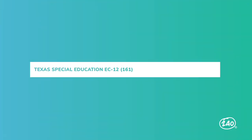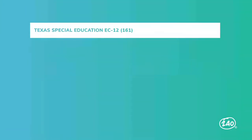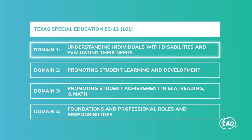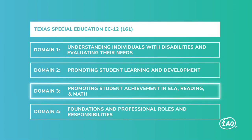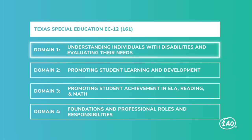The Texas 161 exam is broken into four domains: understanding individuals with disabilities and evaluating their needs; promoting student learning and development; promoting student achievement in English language arts and reading, and in mathematics; and foundations and professional roles and responsibilities. Each domain has between two and five competencies nestled under it.